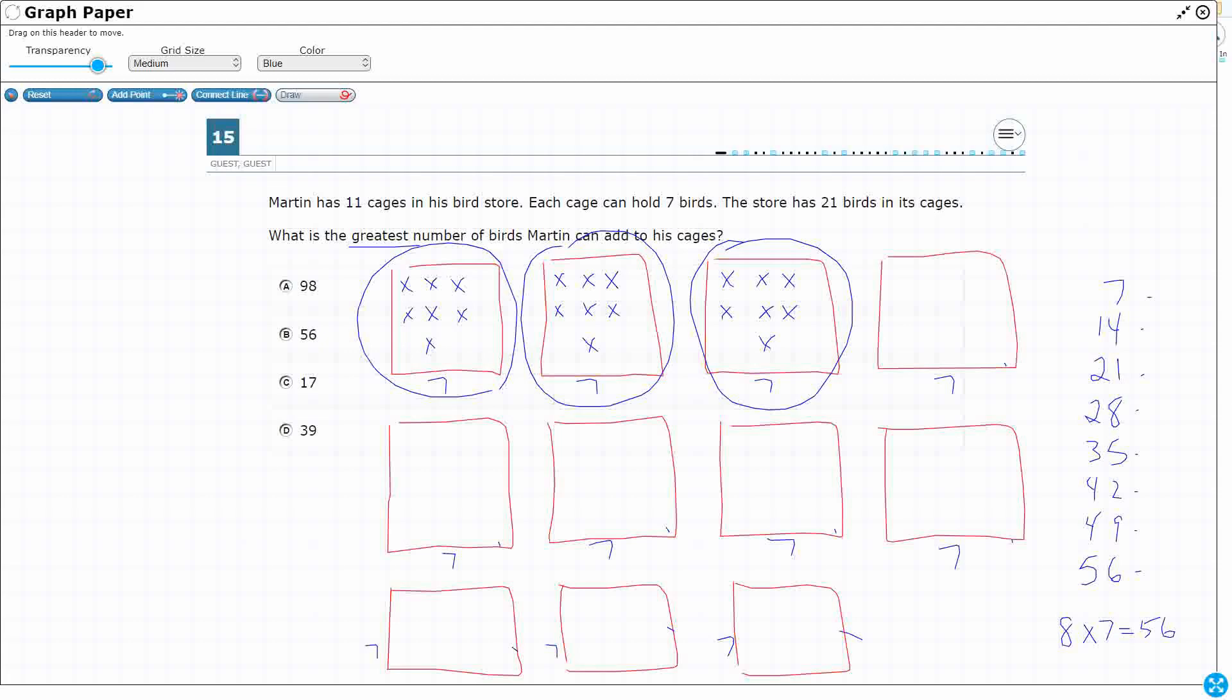Okay, so let's see if we can show this as an equation, or can I show this as a strip diagram, right? So Martin has 11 cages, and each cage can hold 7 birds. Okay, so what I'm going to do is I'm going to draw my total up here.